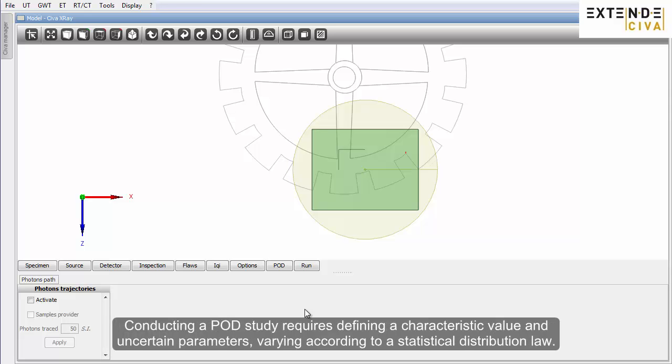Conducting a POD study requires defining a characteristic value and uncertain parameters, varying according to a statistical distribution law.